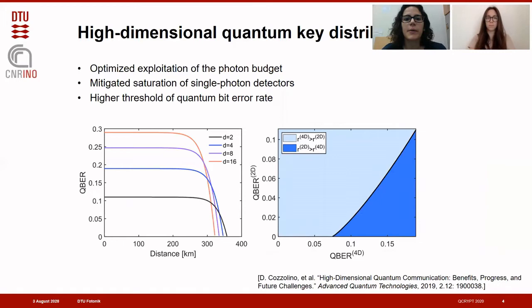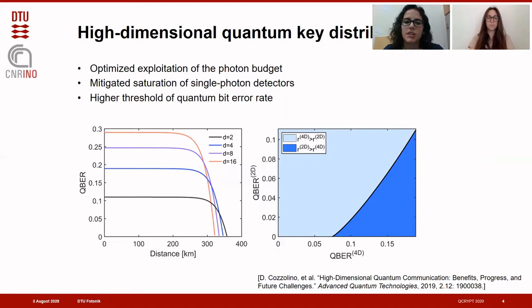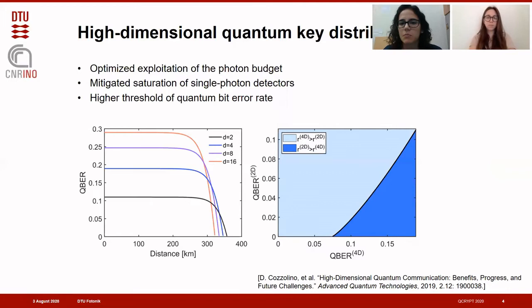By using high-dimensional encoding in quantum key distribution, it is possible to optimize the photon budget at the transmitter, as each single photon is prepared to carry more than one bit of the secret key. The increased information capacity also mitigates the issue of saturation of single-photon detectors at the receiver, which is the typical limitation of the secret key rate achievable at short distances. In addition, high-dimensional QKD is more robust to noise, as for the same quantum bit error rate, it is possible to generate more secret key bits with a high-dimensional protocol than with a two-dimensional one.